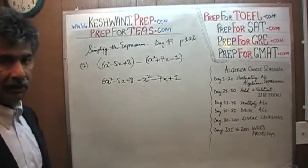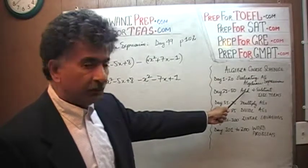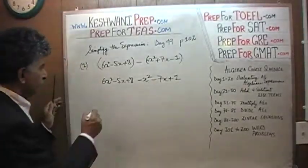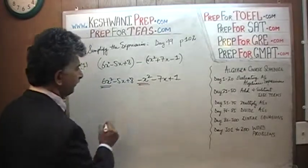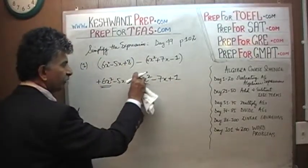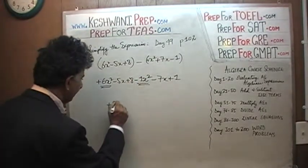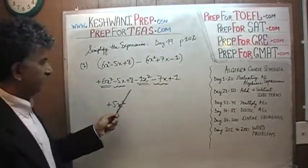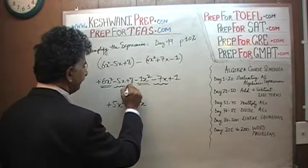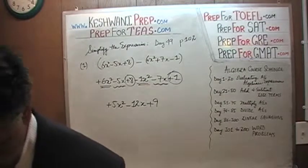The next thing we have to do is add all the like terms, which is what we learned in our algebra course. So here we have 6x squared and negative 1x squared — positive 6 and negative 1 gives us positive 5x squared. Then we have negative 5 and negative 7, which gives us negative 12x. And finally, positive 8 and positive 1 gives us positive 9. So the answer is 5x squared minus 12x plus 9.